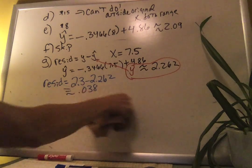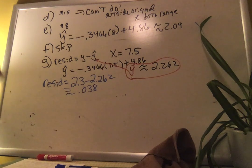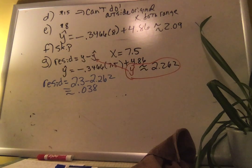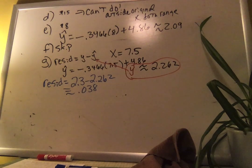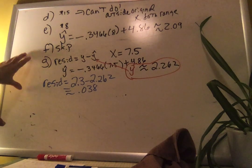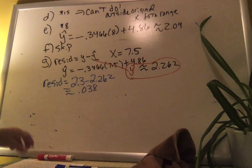Your numbers might be slightly different depending on rounding. That residual is a very small number, meaning that point sits pretty close to the line. This is a good stopping point. In the next video we still have two major pieces: specific interpretations, and we'll come back to Parts C and F that we skipped, then do another full problem from one of the handouts.